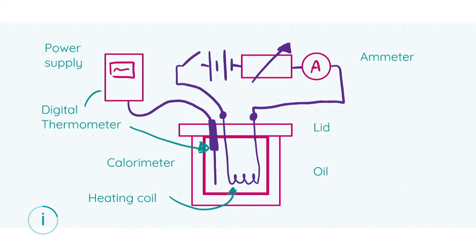The heating coil is submerged in oil — olive oil — and it's kept in a calorimeter, which is the thicker box surrounding the whole system, topped off with a lid. So to round that up: your heating element and digital thermometer sit in some oil, that oil sits in a calorimeter, and the calorimeter is topped off with a lid. Another important thing is the circuitry behind the system.